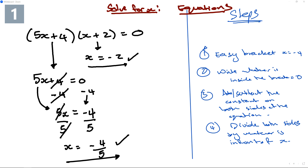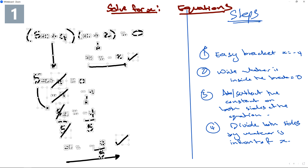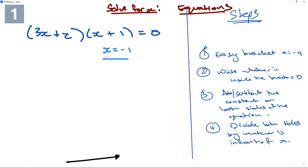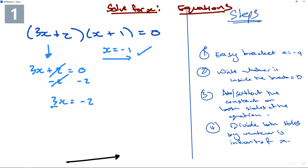That's the second example with all steps applied. Try another one: (3x + 2) and (x + 1) equals zero. x equals negative 1 from the simple bracket. For 3x + 2: write equal to zero, subtract 2 on both sides, giving 3x equals minus 2, then divide by 3, so x equals negative two over three.